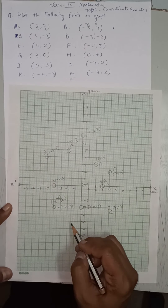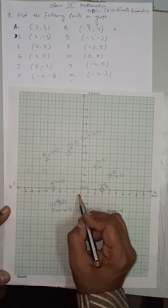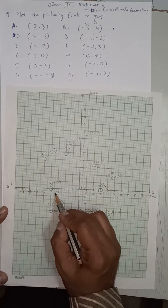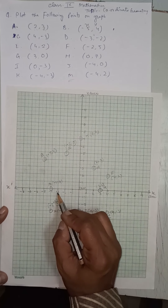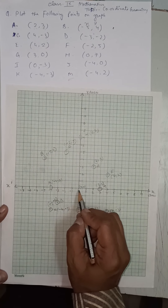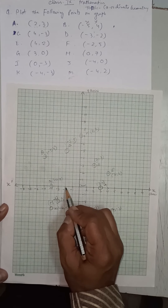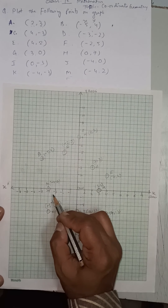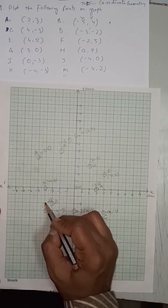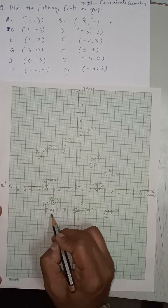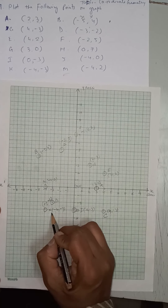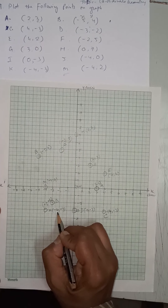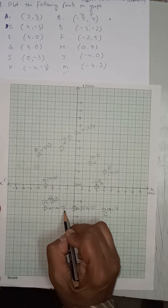Point K is (−4, −3). Minus 4 means x is negative and minus 3 means y is negative — both are negative. So x: minus 1, 2, 3, 4; and y: minus 1, 2, 3. That is point K at (−4, −3).